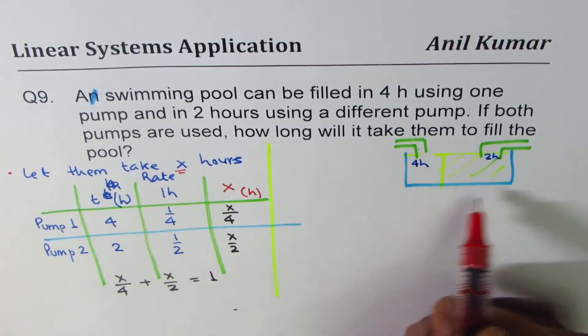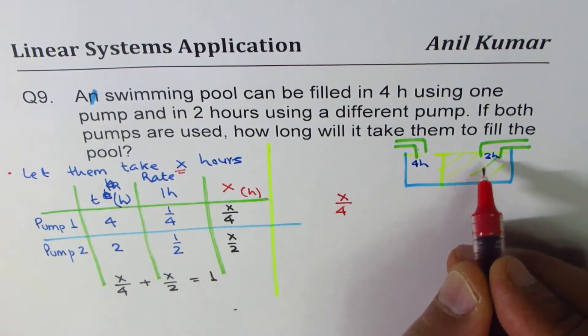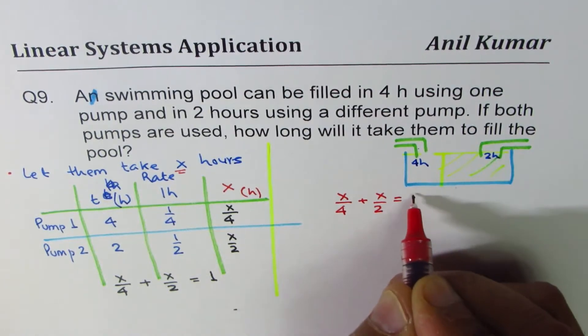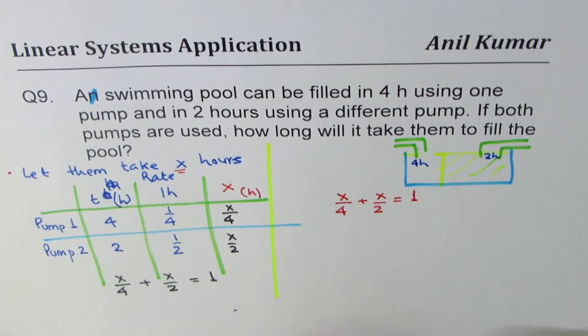So in X hours, how much will this pump fill? X over four. How much will the other pump fill? X over two. At the end, the whole, that is one, whole swimming pool gets filled. So that becomes the equation. Do you see that?